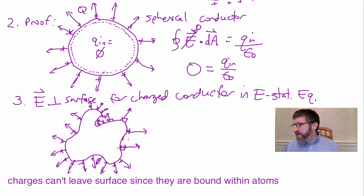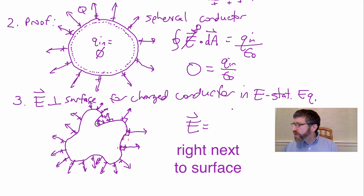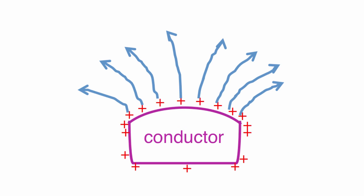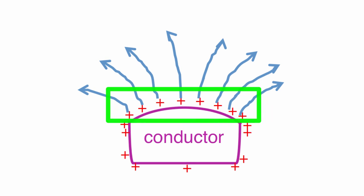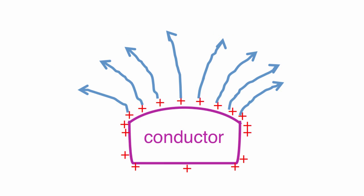At every point on the surface, all field components have to be perfectly perpendicular — no component parallel. We will prove that anywhere next to the conductor, the electric field magnitude is sigma over epsilon naught. Sigma is changing across the surface; it's higher at sharper points, lower elsewhere. But anywhere on that conductor, the electric field will be sigma for that point over epsilon naught, which we'll prove with Gauss's law. Note: the field is only perpendicular and only equals sigma over epsilon naught right next to the surface, not farther away.